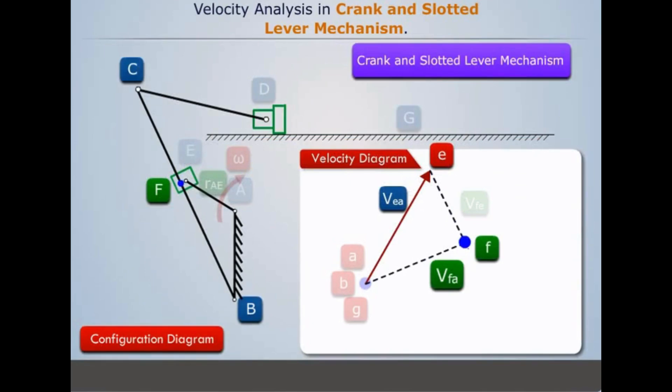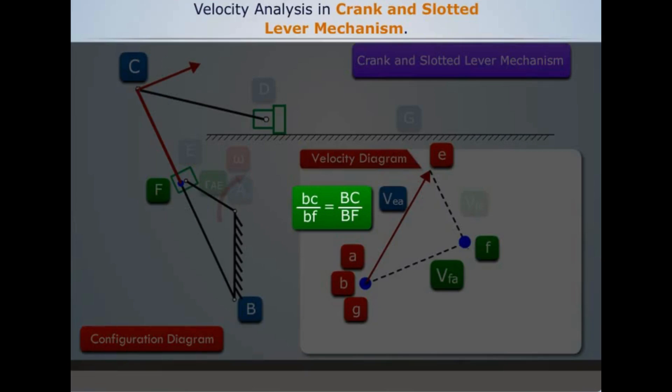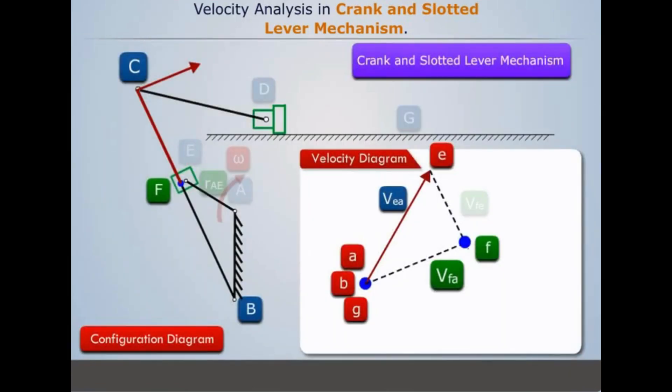Now as the velocity of point F relative to point B is unknown, and point C lies on the extension of line BF, the velocity of point C in the configuration diagram is perpendicular to link BC. Using a simple relation, that is BC by BF equals BC by BF, we can find out velocity of point C.